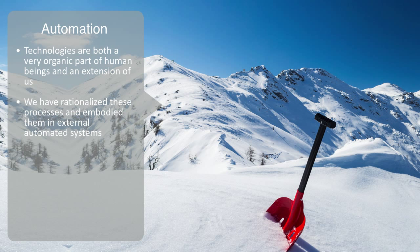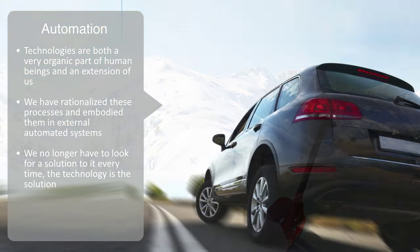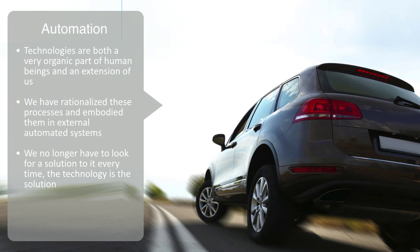By automation we mean that through having rationalized this process, we no longer have to look for a solution to it each time. The technology is the solution — we just have to operate it. The word automatic means acting by itself; in other words, the technology has automated part of the process. I don't need to think about how I'm going to get to work each day — I simply get in my car and drive. I don't even need to know how it actually converts the input to the system, that is liquid fuel, into the functional output, that is personal mobility. And I don't need to think about it because the technology was designed specifically to automate this process.